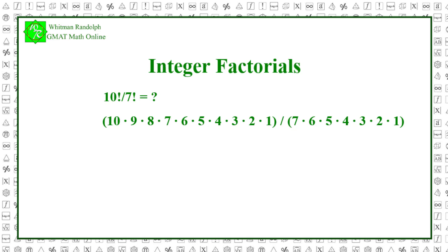But notice that many of the numbers in the numerator and denominator cancel. So you're left with 10 times 9 times 8 equals 720.